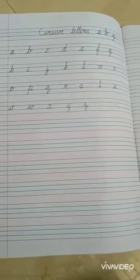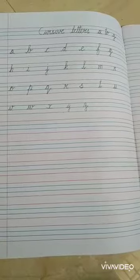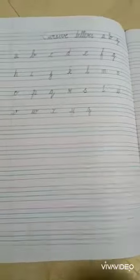Hello Kooties! You have already learnt capital letters and small letters A to Z. Now we are going to learn cursive letters A to Z.